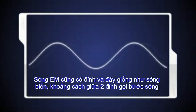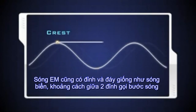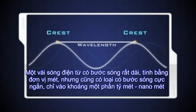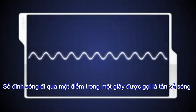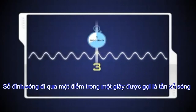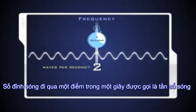EM waves have crests and troughs like ocean waves — the distance between crests is the wavelength. While some EM wavelengths are very long and are measured in meters, many are tiny and are measured in billionths of a meter, called nanometers. The number of crests that pass a given point within one second is the frequency of the wave. One wave or cycle per second is called a hertz.